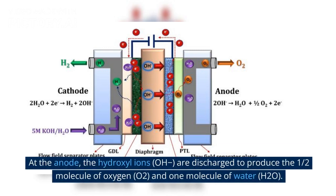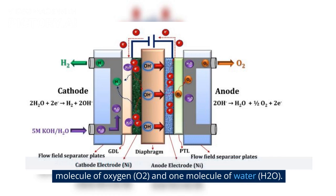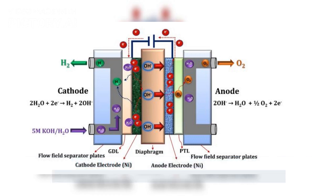At the anode, the hydroxyl ions (OH-) are discharged to produce half a molecule of oxygen (O2) and one molecule of water (H2O).